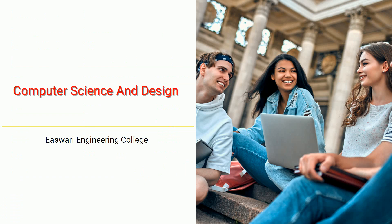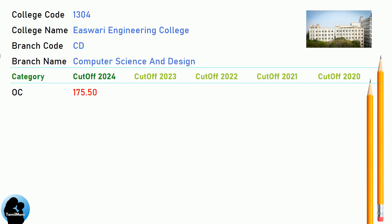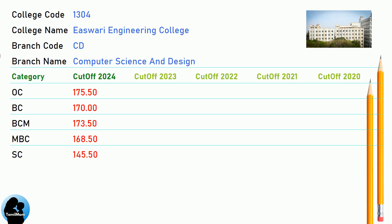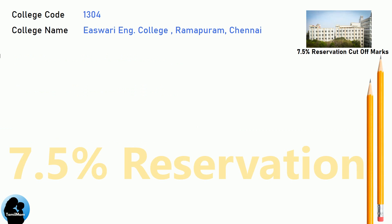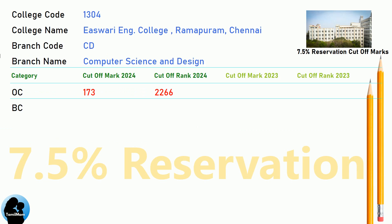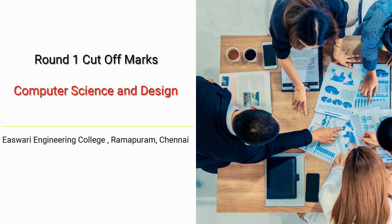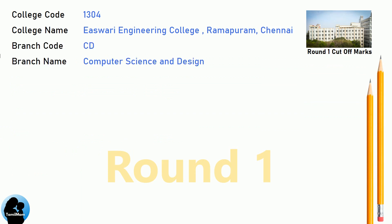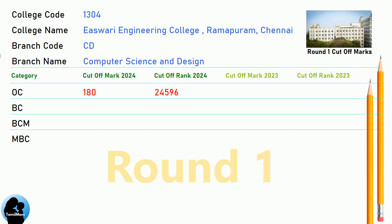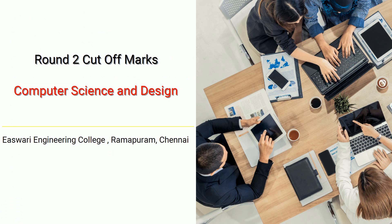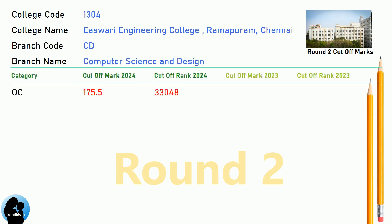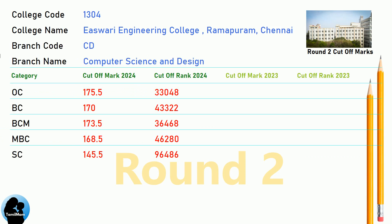DNA Cut-Off for Eshwari Engineering College in Computer Science and Design. DNA 7.5 Reservation Cut-Off for Eshwari Engineering College in Computer Science and Design. DNA Round 1 Cut-Off and DNA Round 2 Cut-Off for Eshwari Engineering College in Computer Science and Design.